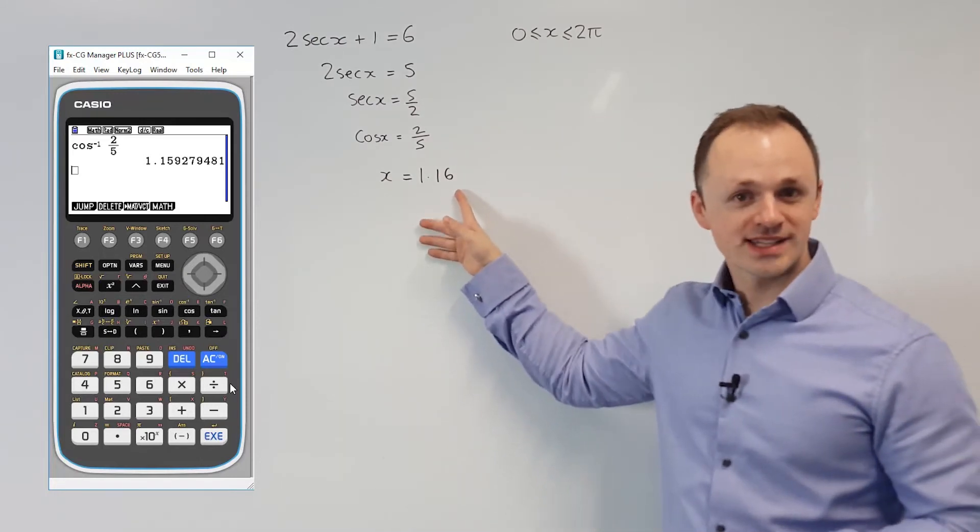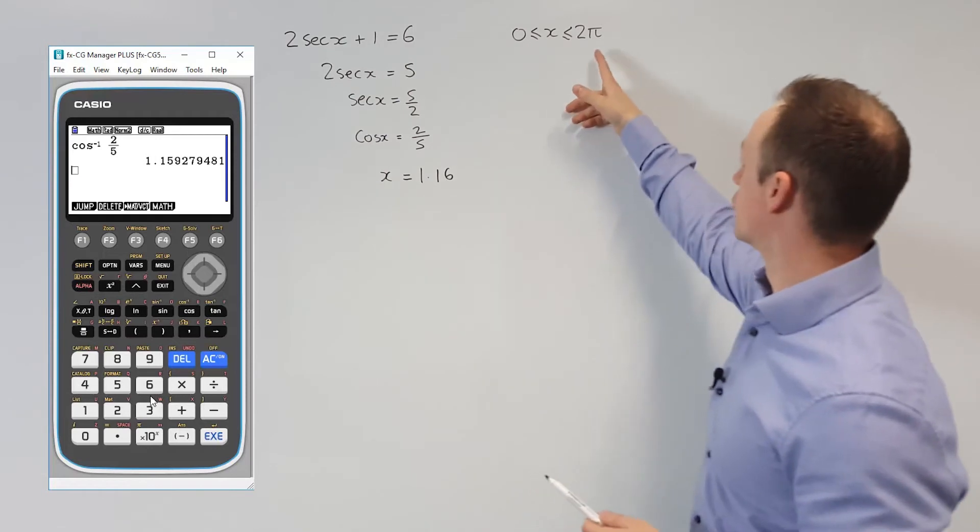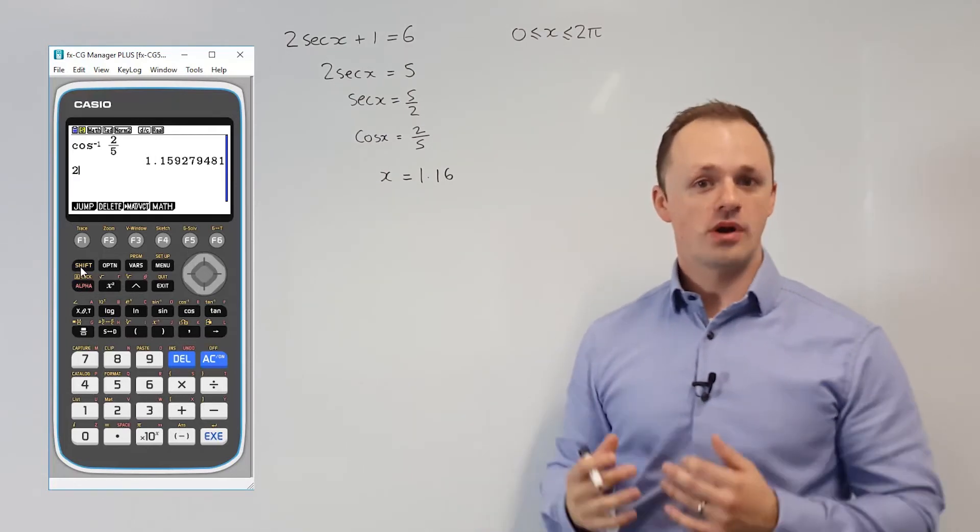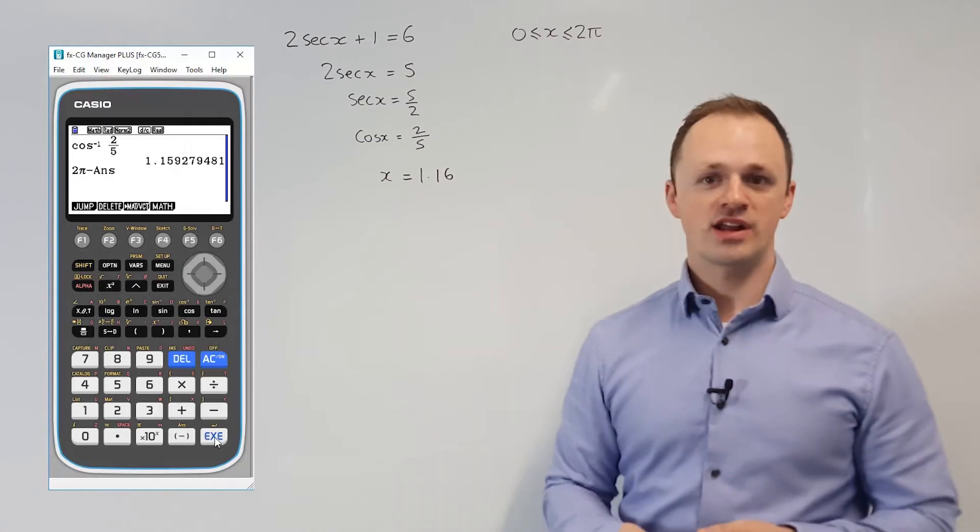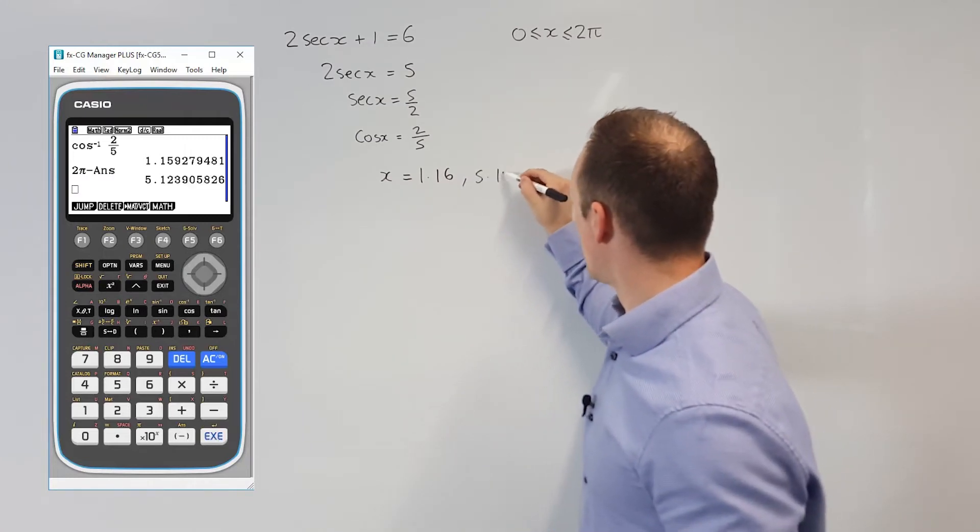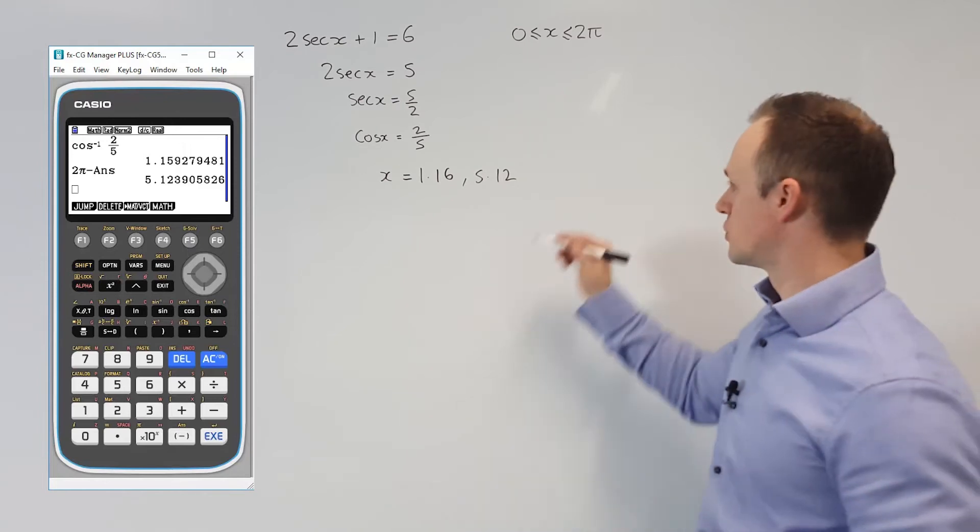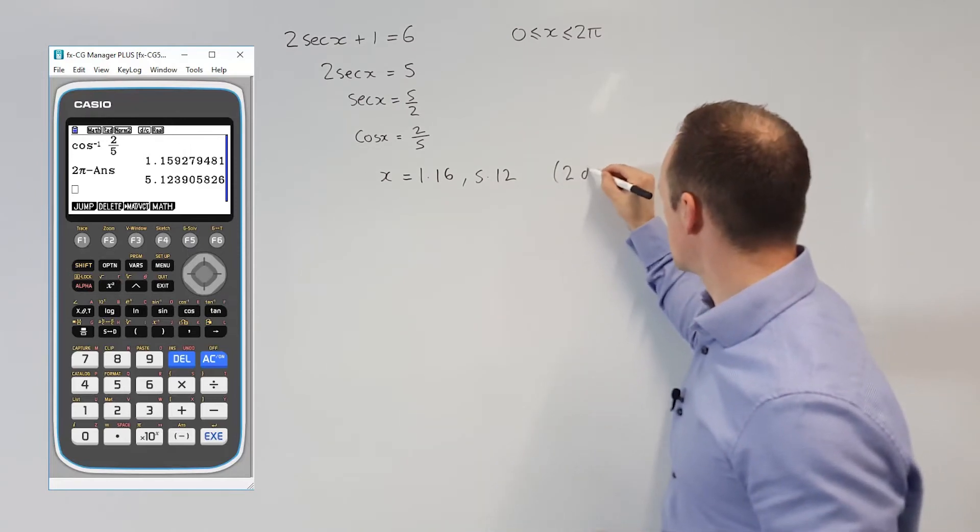Once we've got the principal solution, to get a second solution for cos in radians, we're going to do 2 pi minus the original solution. So we're going to do 2 pi minus our answer here, and that would give us 5.12. Both of those answers are to two decimal places in radians.